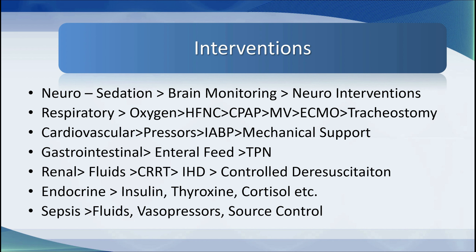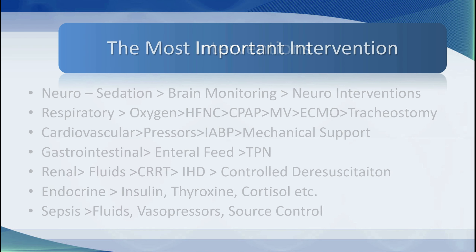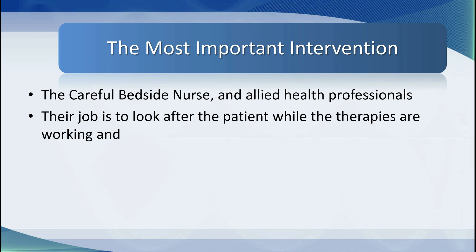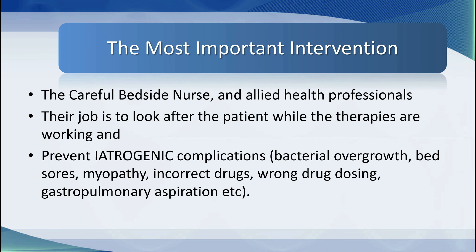The most common reason patients come to the ICU is sepsis. We give these patients fluids and vasopressors, control the source, and follow the patient through — requiring precise administration of antimicrobials based on cultures, following labs and clinical patterns, and if necessary involving surgeons in source control. But the most important intervention in the ICU is unquestionably the careful bedside nurse and allied healthcare professionals, whose job is to look after the patient while therapies work and prevent iatrogenic complications such as bacterial overgrowth, bed sores, myopathy, incorrect drugs, wrong drug dosing, and gastropulmonary aspiration.